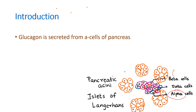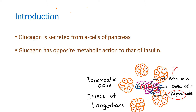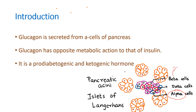Beta cells produce insulin. Glucagon is the exact opposite of insulin — its function is exactly opposite to that of insulin. Glucagon is pro-diabetogenic, which means it increases the glucose level in the blood, and it is ketogenic, which means it increases the ketoacid level in the blood.